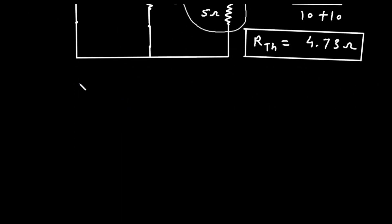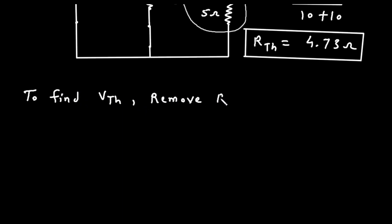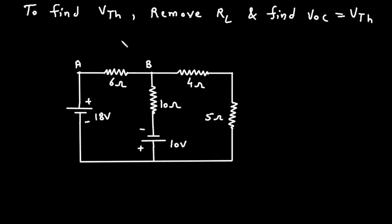Now similarly we will find the value of VTH. To find VTH, we will remove RL and find VOC, which equals VTH — that is, VOC is the open circuit voltage at the terminals. If we remove this RL, this will be our VTH, with positive and negative terminals.